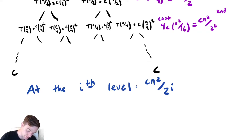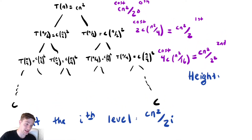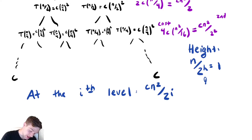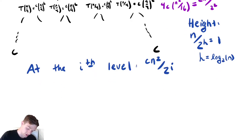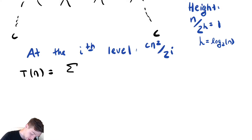We also need to determine the height, which we can compute by finding how many times we need to make these recursive calls to terminate. Each recursive call reduces the size by half, so we need to solve n over 2 to the h equals 1. Solving for h gives us h equals log base 2 of n. So the total cost T(n) is equal to the sum of the costs at each level.